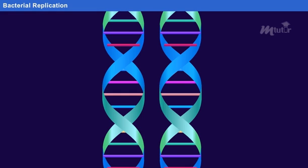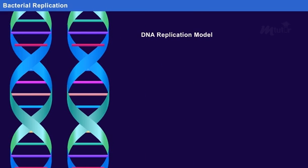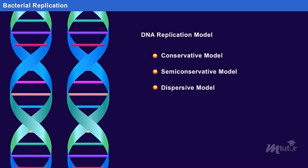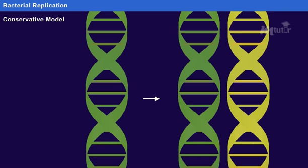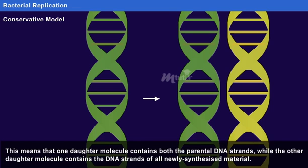The three DNA replication models include the conservative model, the semi-conservative model, and the dispersive model. Conservative model: In this model, the two parental DNA strands remain together after the replication process. This means that one daughter molecule contains both the parental DNA strands, while the other daughter molecule contains the DNA strands of all newly synthesized material.